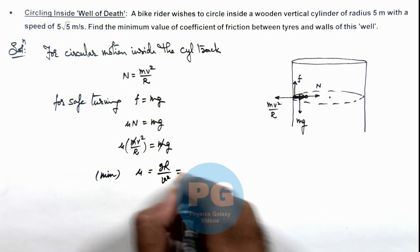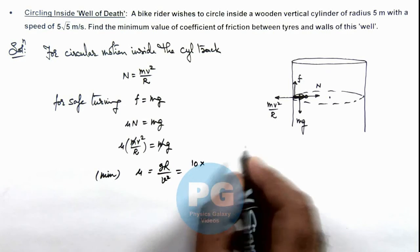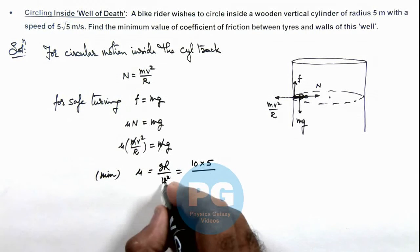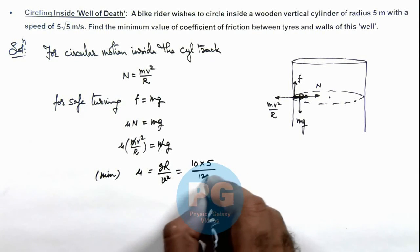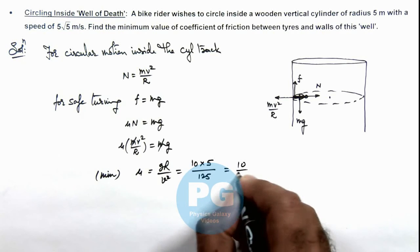g r by v square. If we substitute the values g we can take as 10, radius is given to us as 5 meter, and the speed is 5 root 5 meter per second so on squaring this is 125.